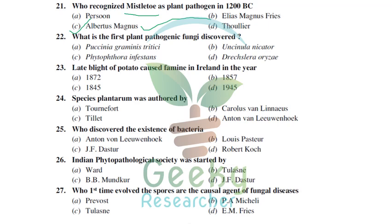The first plant pathogenic fungus to be discovered is Phytophthora infestans. Before this, nobody had proved that fungi could cause plant disease. Anton de Bary proved it by discovering Phytophthora infestans as the cause of late blight of potato. The late blight of potato caused the Irish Famine of 1845, leading to the death of 1 to 1.5 million people from starvation and the migration of many to the USA, Central America, and North America.